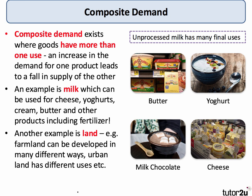A really good example of composite demand is land. For example, farmland — if farmers decide to leave the industry, that farmland could be developed in different ways. It could be turned into a golf course, housing, or a solar panel farm. Land has many different uses, so land is in composite demand.